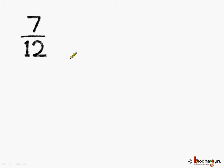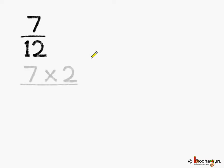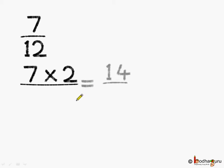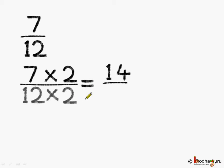The next fraction is 7 by 12. In order to make the denominator as 24, we need to multiply both the numerator and the denominator by 2. So, 7 multiplied by 2 is equal to 14. 12 multiplied by 2 is equal to 24.